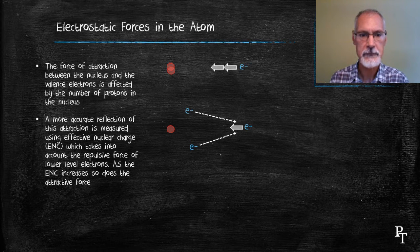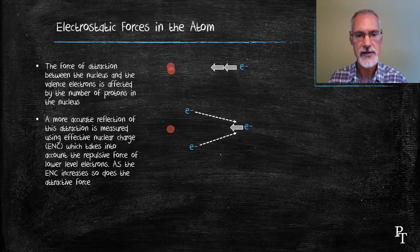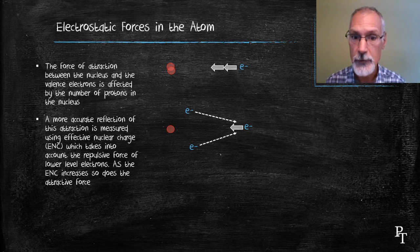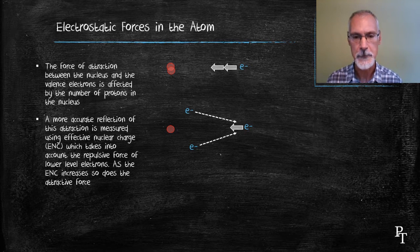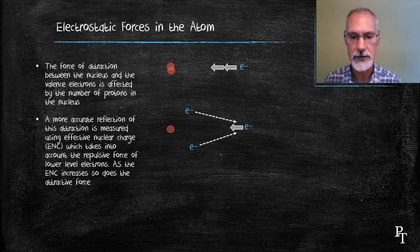As a result, chemists tend to measure what's called the effective nuclear charge, which takes into consideration both the number of protons that are in the nucleus as well as the number of inner-level electrons that are repelling. Let's take a look at how this is calculated.